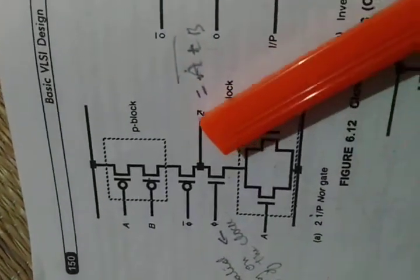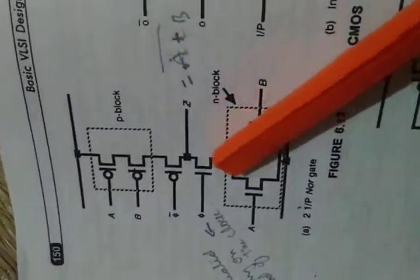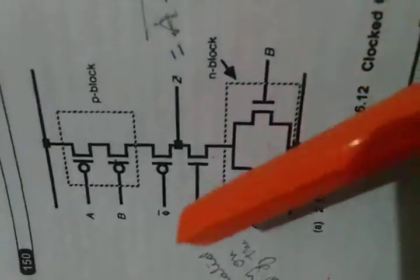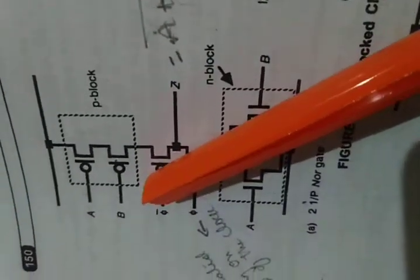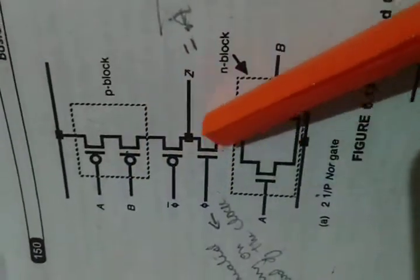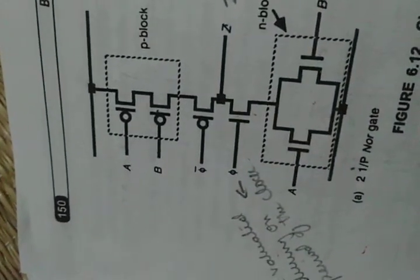The pullup is a P-block and the pulldown is an N-block, as shown in this figure. Along with this, additional transistors are used — these two transistors are the additional ones, driven by phi and phi-bar clock signals.